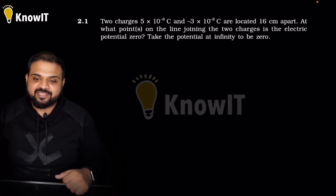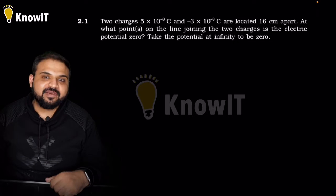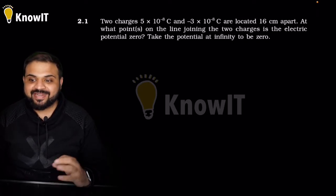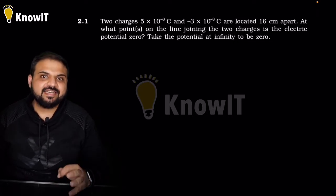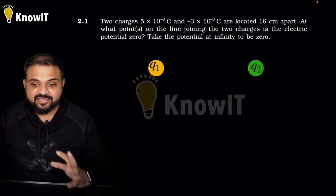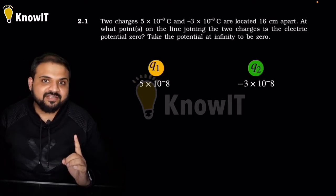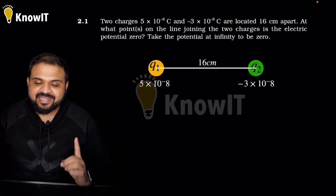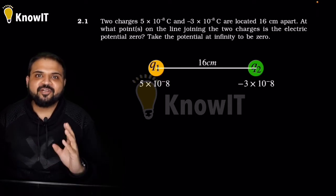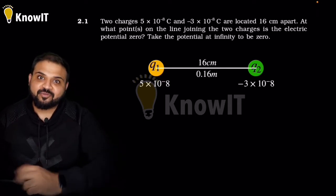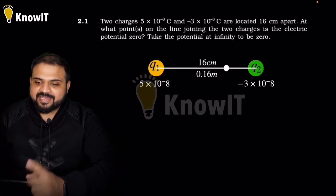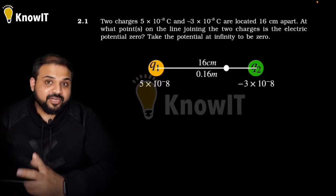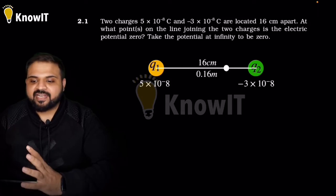The first question: two charges 5×10⁻⁸ coulomb and −3×10⁻⁸ coulomb are located 16 cm apart. Let us say these are two charges Q1 and Q2 which have the same values as given in the question, and they are 16 cm apart from each other, converted into meters that is 0.16 meter. We need to find where the electric potential is zero.